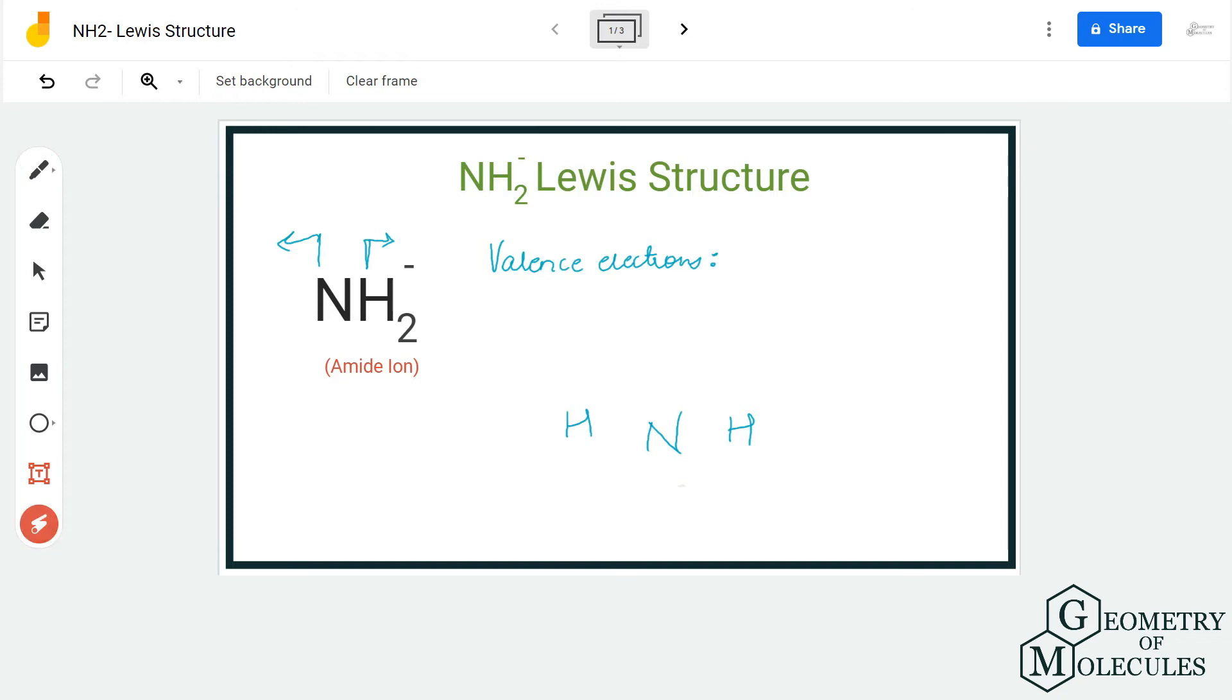Hi guys, welcome back to our channel. In today's video, we are going to look at the Lewis structure for NH2 minus ion. This ion is also known as amide ion, and to determine its Lewis structure we are first going to see the number of valence electrons for this molecule.